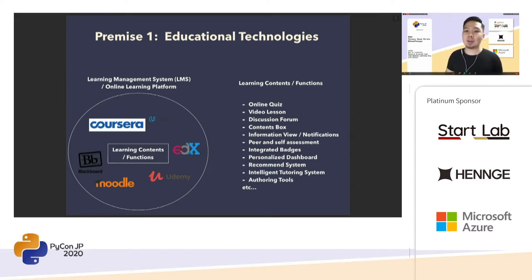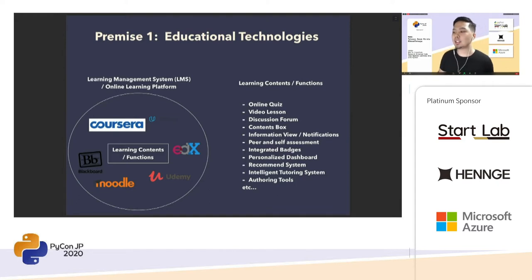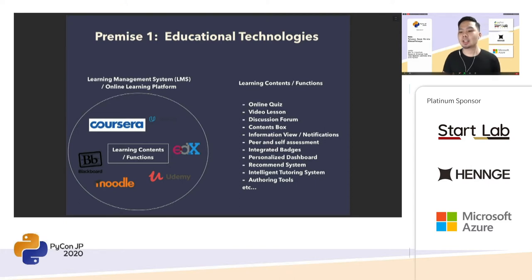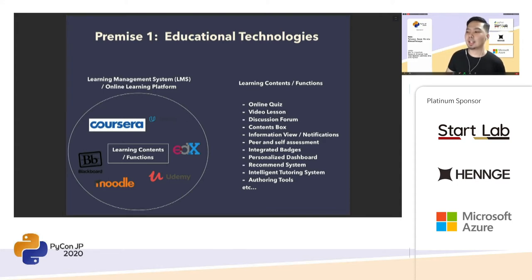These systems basically have several functions to help learners study online. For example, an online quiz function allows students to take online quizzes — teachers can make online tests and distribute them to students. And a video lesson function makes it possible for students to take a lesson from home through a PC screen. While they are using these functions, learning log data is stored in a database behind the online learning platform. Generally, the characteristics of the learning log data have a time series format, including what students take online tests, what kind of online tests are distributed, when students take them, and whether they answer correctly or not.